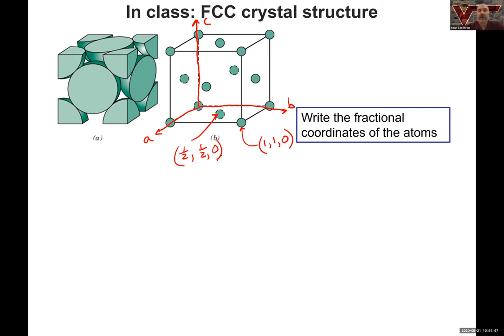And so we'll see that all of the face atoms have similar type coordinates. This one over here, we are a half out in the X. We are all the way out in the B direction. And then now one-half up in the Y direction. So that's how we can write our fractional coordinates.